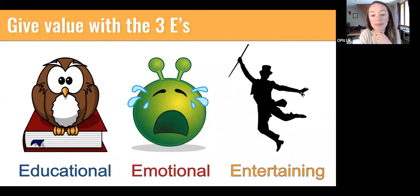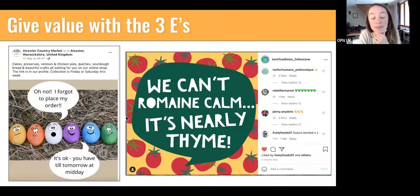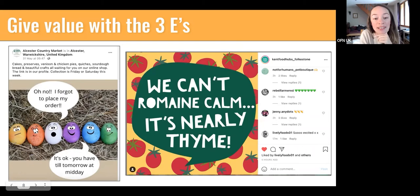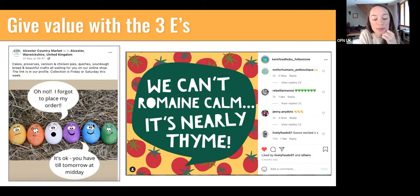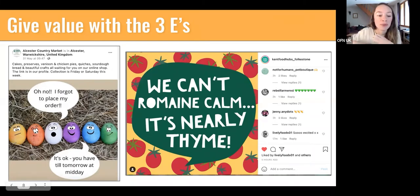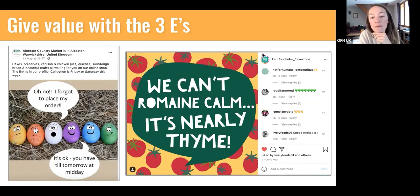Here are a couple of examples of posts covering the three E's — I seem to have picked entertaining ones today. One is from Also Country Market, which is a really quick, smart way of nudging people to remember the order cycle: cute eggs humanized with speech bubbles, delivering a 'don't forget to make your order' message in a slightly funny and entertaining way. Another recent post by Kent Food Hub Folkstone injects puns into their content — food puns are always brilliant.